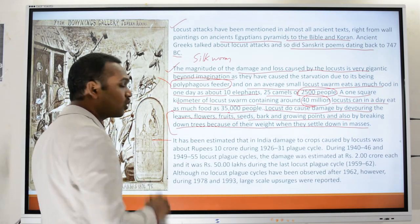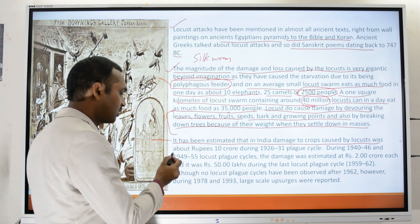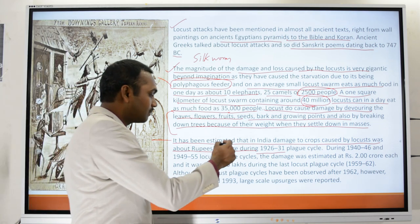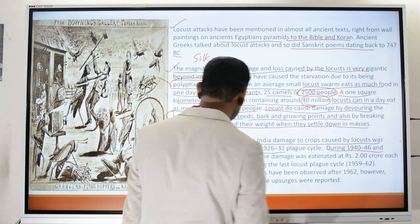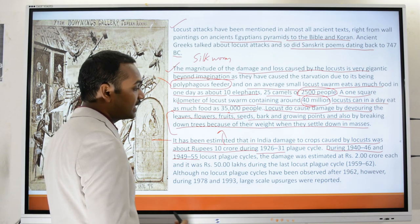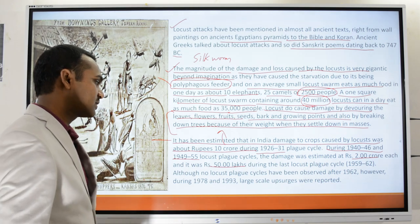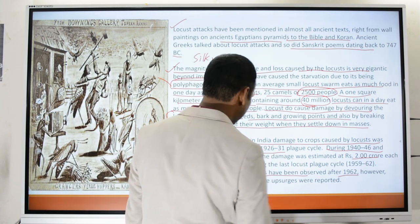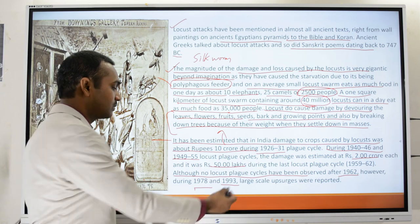In India, damage to crops caused by locusts was about ₹10 crores during 1926 to 1931. During 1940 to 1946 and 1949 to 1955, locusts caused damage of up to ₹2 crores and ₹50 lakh respectively. Although no locust plague cycles were observed after 1962, during 1978 and 1993 large-scale upsurges were observed.